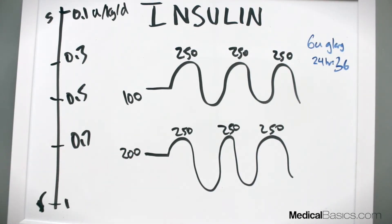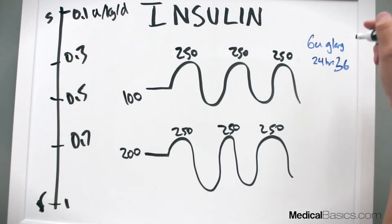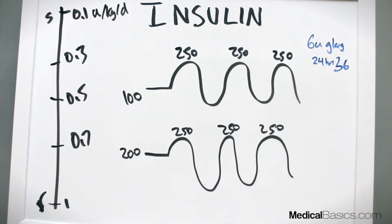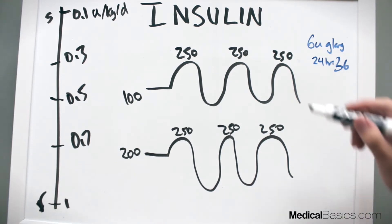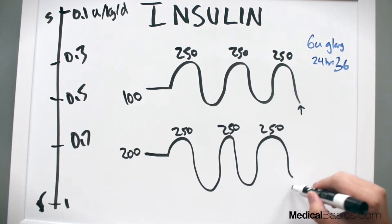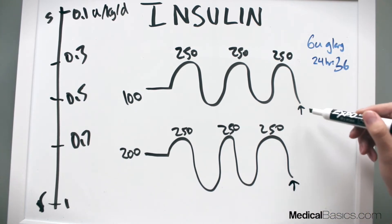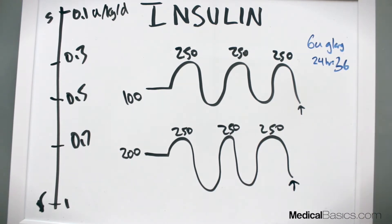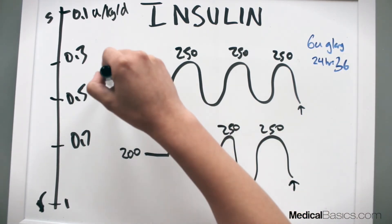Now here are examples of how to adjust insulin. These two examples show how we think about adjusting long-acting insulin and then how we think about adjusting short-acting insulin. In the first example, we have a patient receiving six units of glargine at nighttime. The way you figure out whether the long-acting insulin is sufficient or too much is based on fasting blood sugars — whatever their sugars are in the morning after fasting all night.